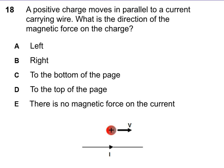A positive charge moves in parallel to a current carrying wire. What is the direction of the magnetic force on the charge?